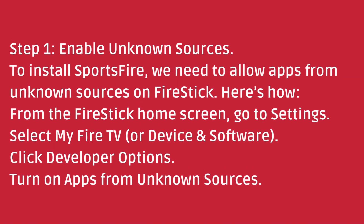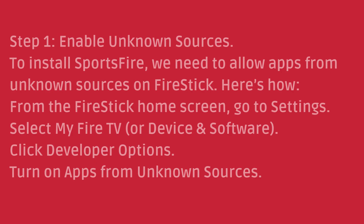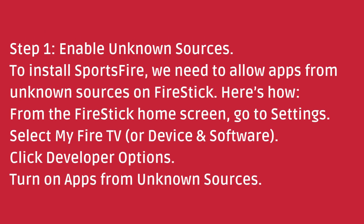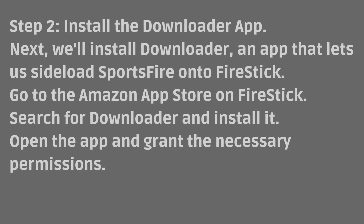Step 1: Enable unknown sources. To install Sportsfire, we need to allow apps from unknown sources on Fire Stick. Here's how. From the Fire Stick home screen, go to Settings. Select My Fire TV or Device and Software. Click Developer Options. Turn on apps from unknown sources.